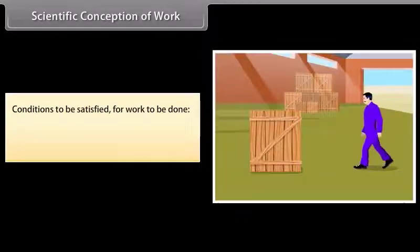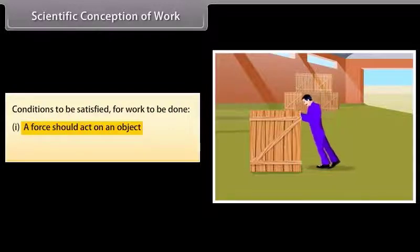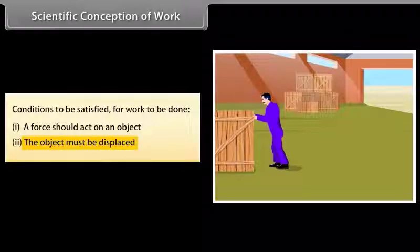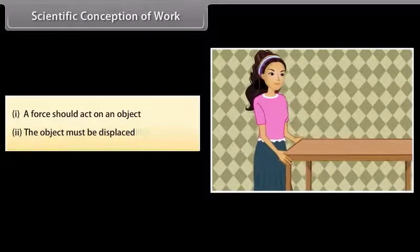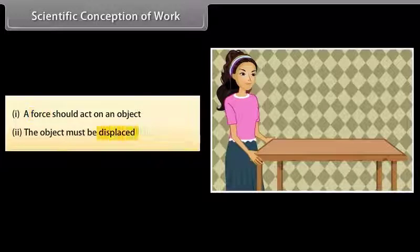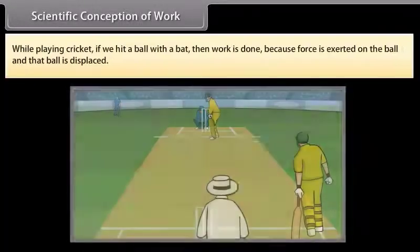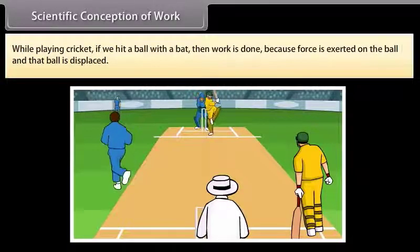For work to be done, two conditions should be satisfied. First, a force should act on an object. Second, the object must be displaced. For example, if we pull a table and the table moves through a distance, both conditions are satisfied — so work is done. Similarly, while playing cricket, if we hit a ball with a bat, work is done because force is exerted on the ball and the ball is displaced.